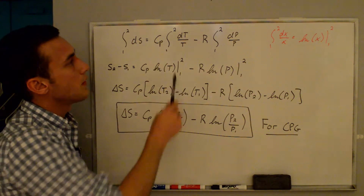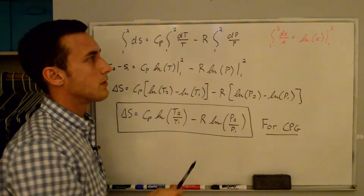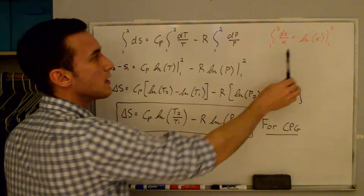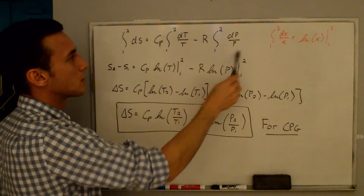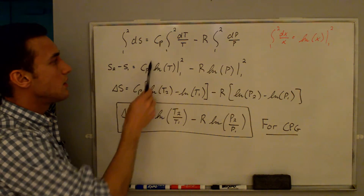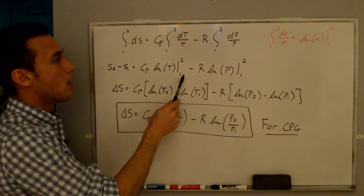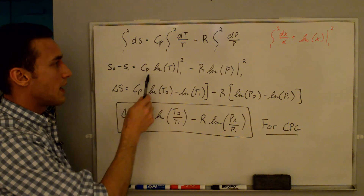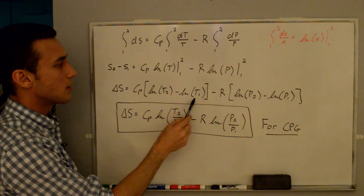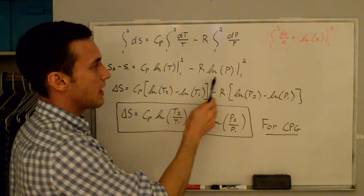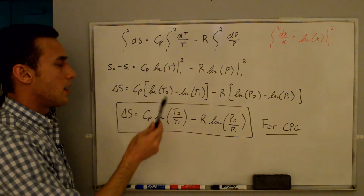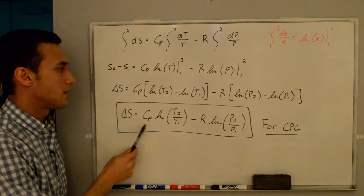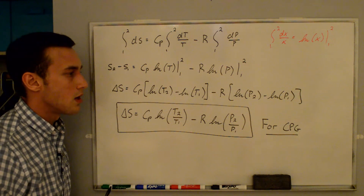These two integrals are in the form where the integral from state one to state two of dx/x equals the natural log of x evaluated from state one to state two. Integrating, we get s2 minus s1 equals cp times ln(T) evaluated from one to two, minus R times ln(p) evaluated from one to two. Applying log rules, the difference of natural logs gives the ratio, so delta s equals cp·ln(T2/T1) minus R·ln(p2/p1).